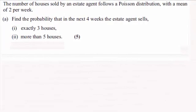Hi there. Now for this question it's all about the Poisson distribution. We're given that the number of houses sold by an estate agent follows a Poisson distribution with a mean of two per week, and we're asked to find the probability that in the next four weeks the estate agent sells exactly three houses and then more than five houses.